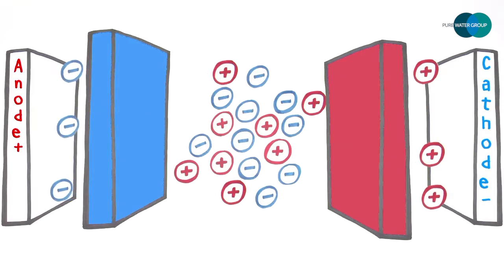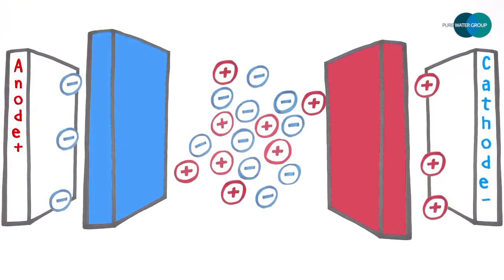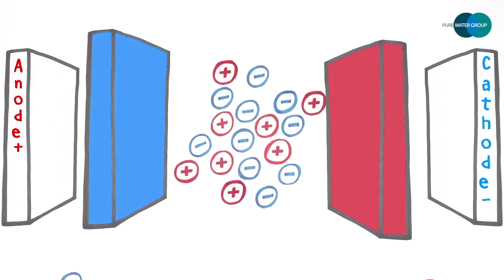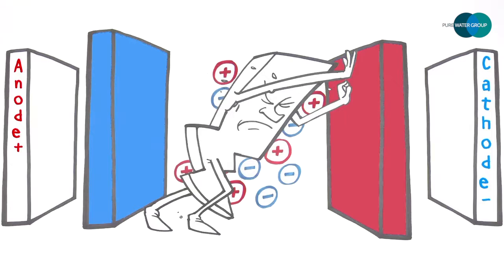This reject stream is then discarded, recycled, or processed further. But low conductivity feed waters inhibit passage of the electric current that transports ions.